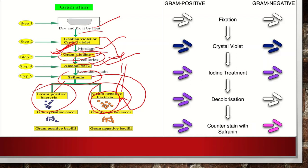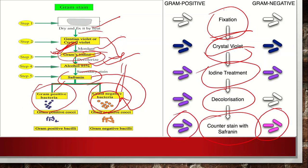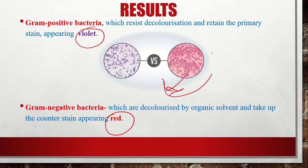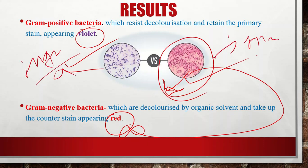The steps are: fixation by heat or methanol, then crystal violet, then iodine as mordant, then decolorizer — alcohol or acetone — and then counterstain with safranin. Gram positive bacteria retain the crystal violet and appear purple. Gram negative bacteria, having less peptidoglycan and more lipids which are dissolved by the alcohol decolorizer, lose the crystal violet color and get stained by safranin, appearing red.